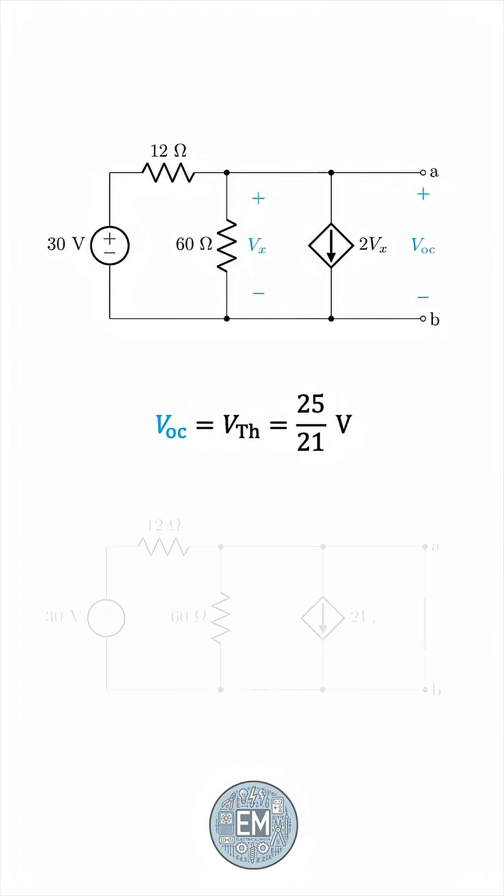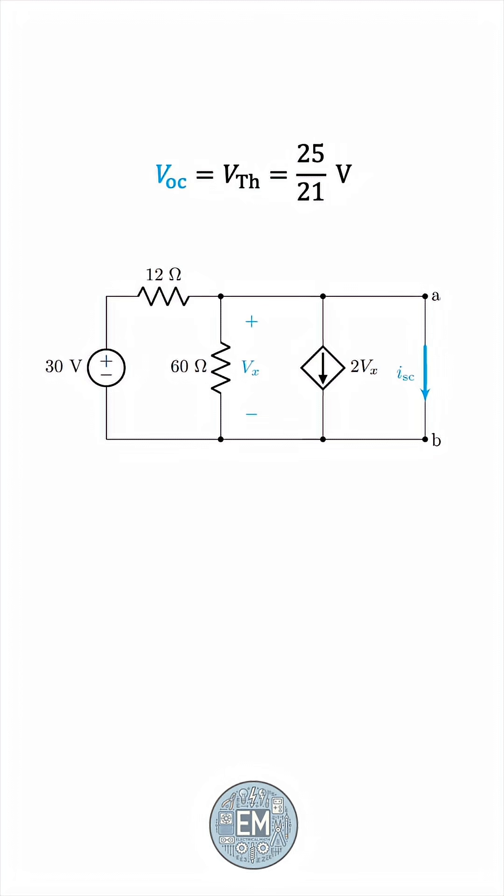We'll find the short-circuit current between the two terminals. Let's analyze the circuit again. We have this current exiting the source, but wait. There is a short, so the current will bypass the first two branches and go in its entirety to the short-circuit between A and B.